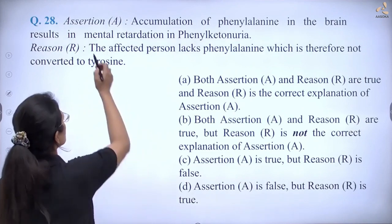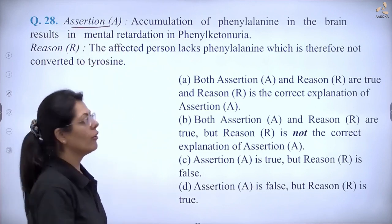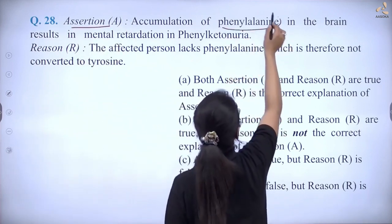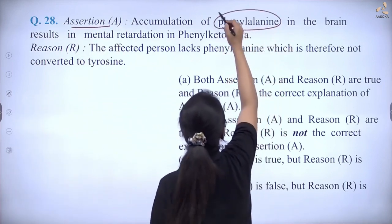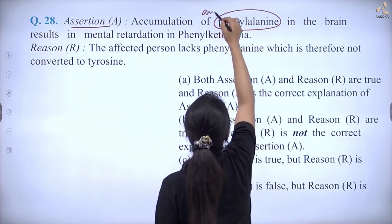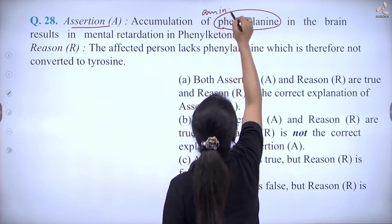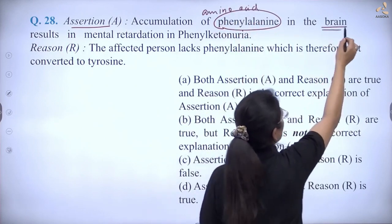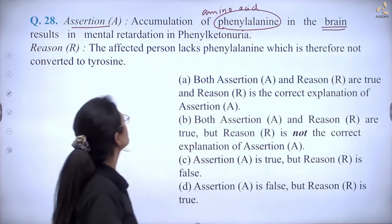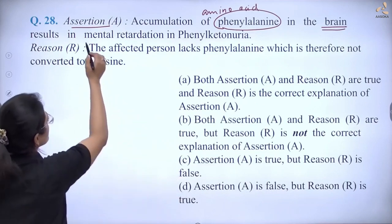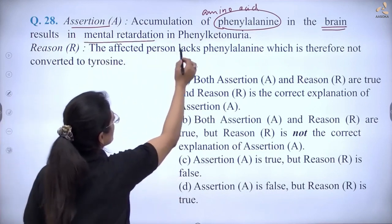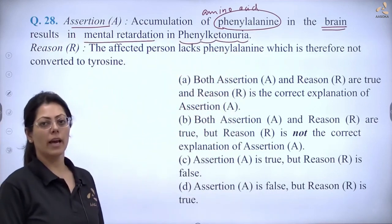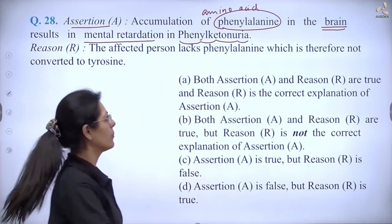The assertion says accumulation of phenylalanine. Phenylalanine is a type of amino acid. Accumulation of this amino acid in the brain results in mental retardation in a disease called phenylketonuria.